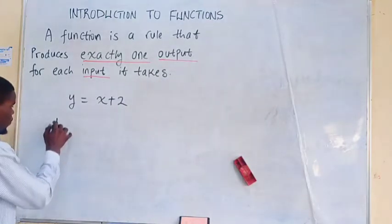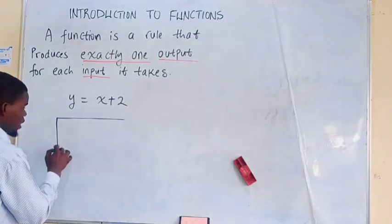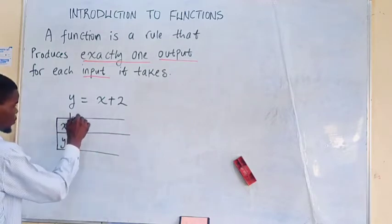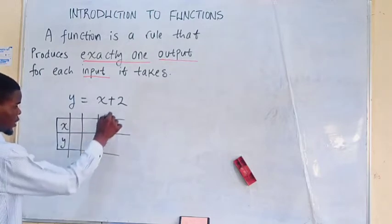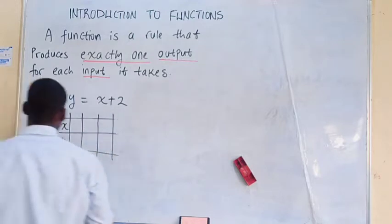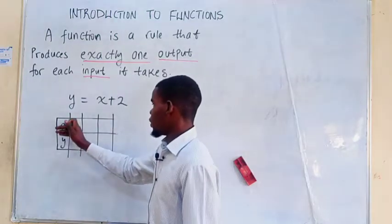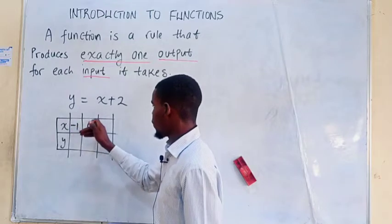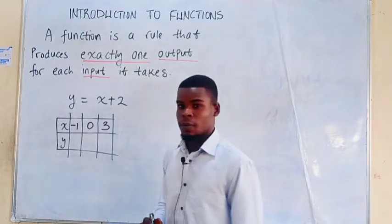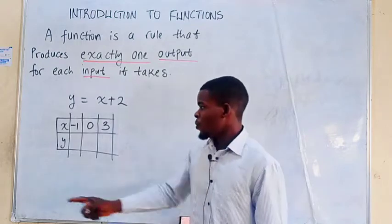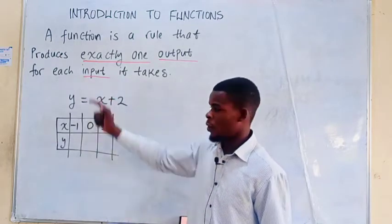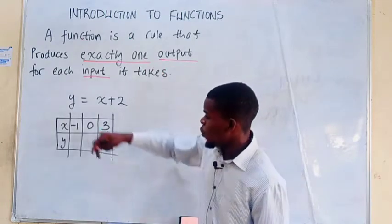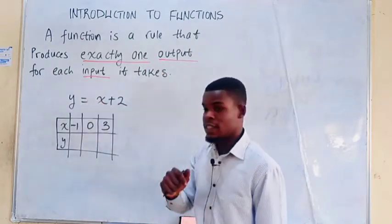So let me just give you some values for the x and then we'll use that to generate values for y. So create a table like this. Let's input negative 1, let's input 0, and then let's input 3. Now, the x here takes care of the input, while the y here takes care of the output. So for each x, let's see what we get.